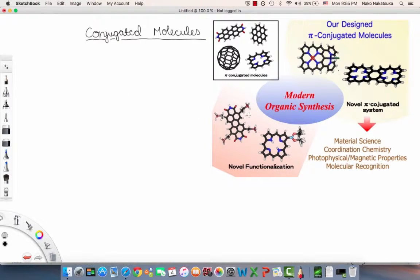I put this image here to show our designed pi conjugated molecules which can be used for different applications in material science, coordination chemistry, photophysical magnetic properties, and molecular recognition. Although you're just learning this bland topic of conjugated molecules, they ultimately have a lot of cool applications in modern organic synthesis with novel functionalization.